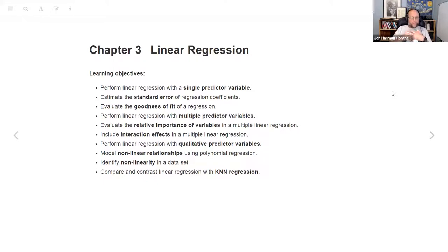By the end of this chapter, we will hopefully be able to perform linear regression with a single predictor variable, estimate the standard error of regression coefficients, evaluate the goodness of fit of a regression, perform linear regression with multiple predictor variables, and evaluate the relative importance of variables in a multiple linear regression.